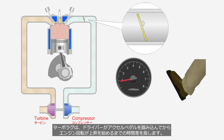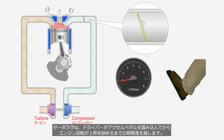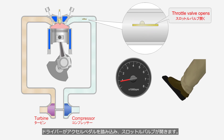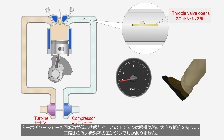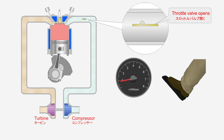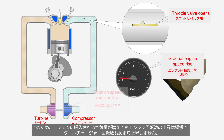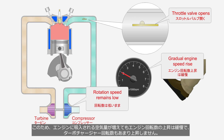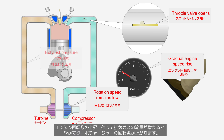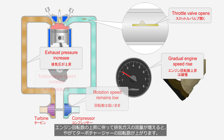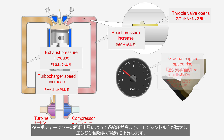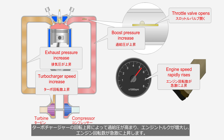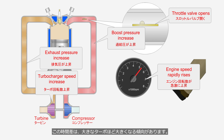Turbo lag refers to the time delay between the driver depressing the accelerator pedal and the commencement of the engine speed increase. When the driver depresses the accelerator pedal, the throttle valve opens. When the turbocharger rotation speed is low, due to significant resistance in the intake and exhaust pathways and a low compression ratio, the engine operates at only low efficiency. As a result, despite the increased volume of air intake, the rise in engine speed is gradual and the turbocharger rotation speed does not increase significantly. After the engine speed and exhaust gas volume increase, the turbocharger rotation speed begins to rise, leading to higher boost pressure, increased engine torque, and a rapid rise in engine speed. Generally, the time lag is longer with larger turbochargers.